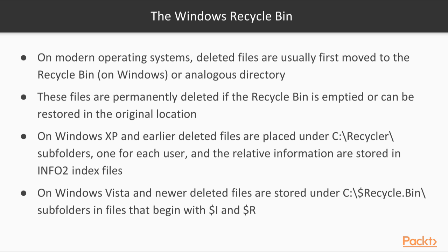On modern operating systems, files are not permanently deleted on a first instance unless the user explicitly does so. Instead, they are first moved to the recycle bin, or trash, depending on the OS. They can be restored to their original locations or permanently deleted when the recycle bin is emptied. The data blocks are left untouched and are not marked as free until the file remains in the recycle bin.